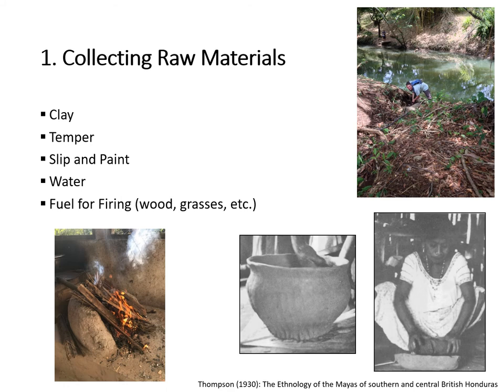The first step in the pottery production process is to collect the raw materials. Clay, water, and fuel are the basic raw materials required to make a ceramic vessel. Temper is not required but is often added by potters. If vessels are decorated with a slip or paint, then those materials must also be acquired. In this presentation, I'm just going to discuss clay and temper because these are the raw materials used to produce the vessel. Slip and paint are used as decorations applied to the surface of either fired or unfired vessels.